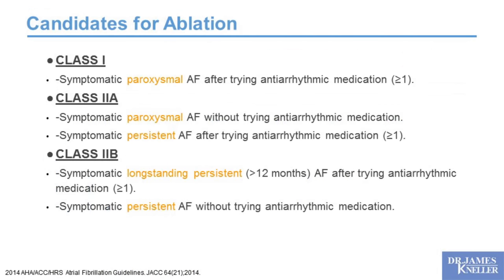Who are candidates for ablation? The clearest indication — a class one recommendation — is the symptomatic patient in a paroxysmal pattern who has tried at least one antiarrhythmic medication. If you haven't tried antiarrhythmic medication or are in a persistent pattern, we still have a green light, but it's turning yellow. We take patients with all indication classes when appropriate, and those most clearly suffering from atrial fibrillation. The short paroxysmal pattern has the best possibility of success from ablation.